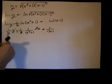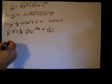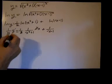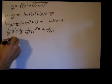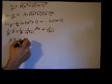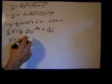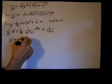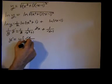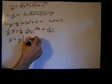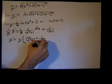So now we multiply both sides by y. I'll get the common denominator in a minute. So y prime equals y times x over x squared plus one plus one over x minus one.